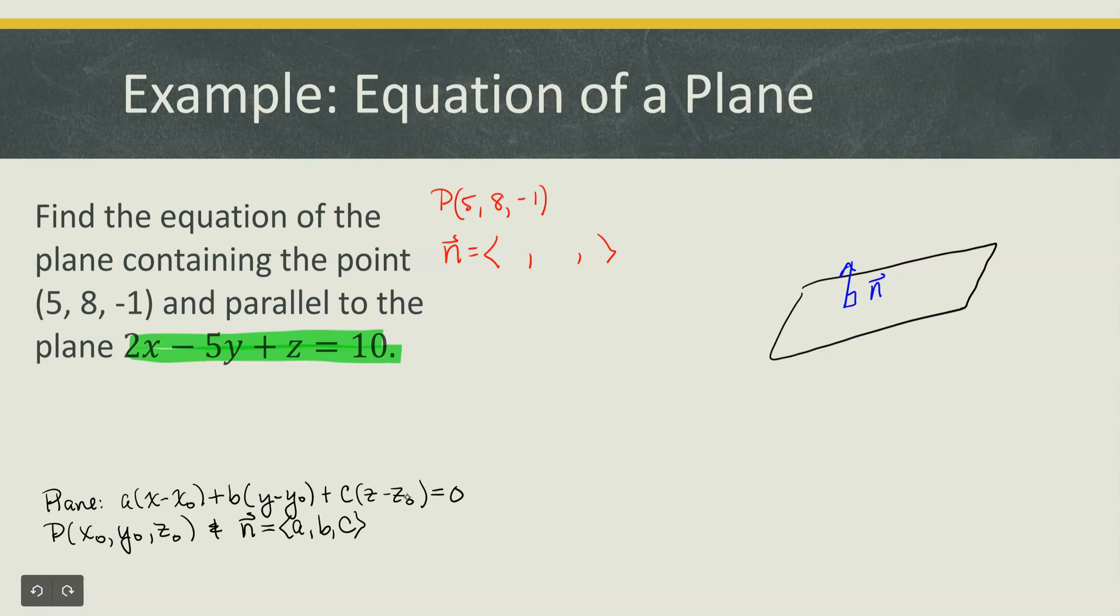And if we look at this form of the plane, we have a times x, so the coefficient of the x term should be a. Then we have b times y. The coefficient of b should be this second component or negative 5.